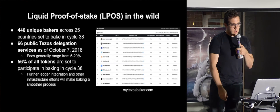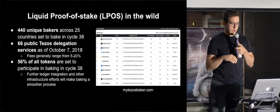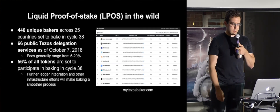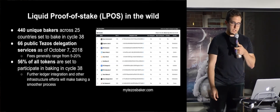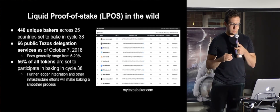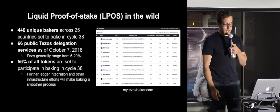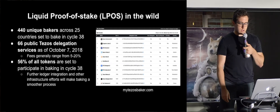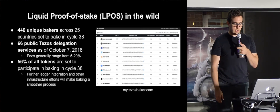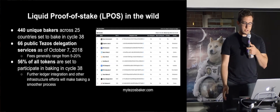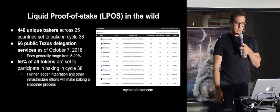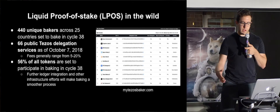Let's look at how it's operating in the wild. We have about 440 unique bakers at this point across 25 countries, prepared to bake in cycle 38, which is in a few weeks. There are 66 public Tezos delegation services, at least on mytezosbaker.com as of a couple of days ago. Fees generally range from about 5 to 20 percent — I usually see around 10 percent. 56 percent of tokens are set to participate in baking in cycle 38 — very exciting. I think once we have better ledger integration and the user interface improves, baking will become much easier and have much wider adoption.